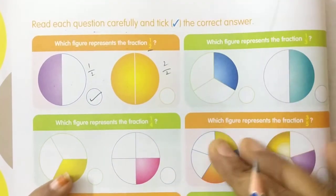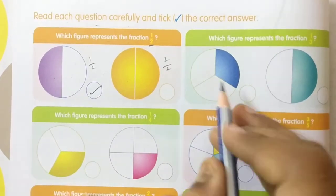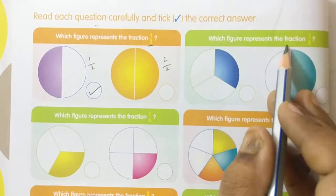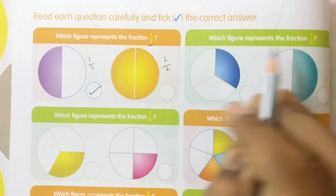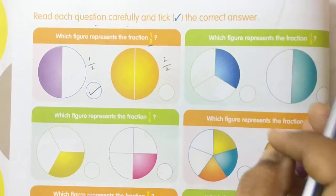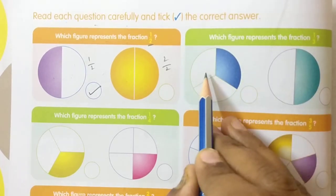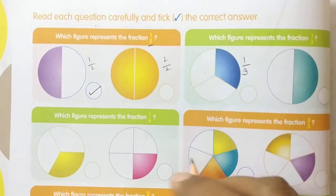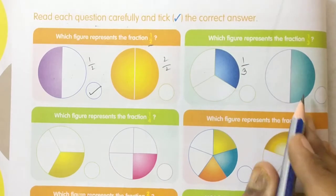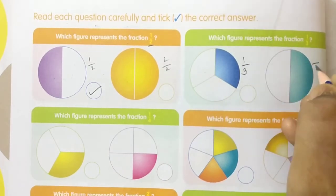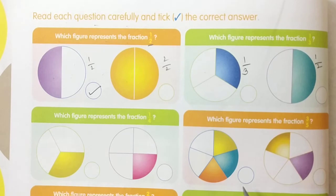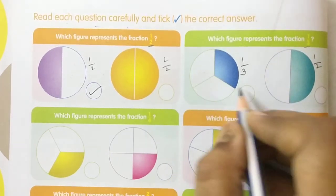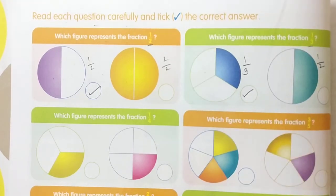Same process. Come to the next one. First read the question: which figure represents the fraction 1 by 3? First figure: 1, 2, 3 — total 3 parts, 1 is shaded. Second figure: 1, 2 — only 2 parts, 1 part is shaded. In the question they ask for 1 by 3, and we got it in the first figure. So keep tick mark there.